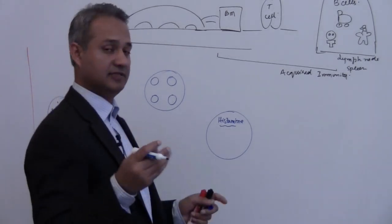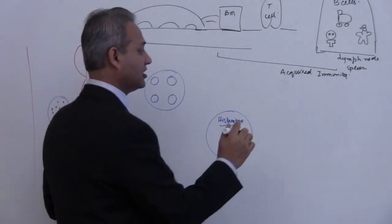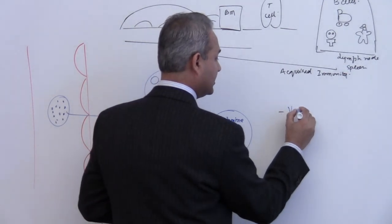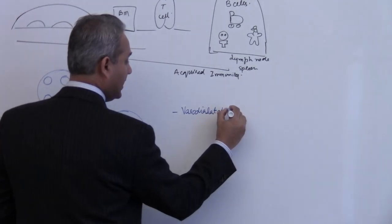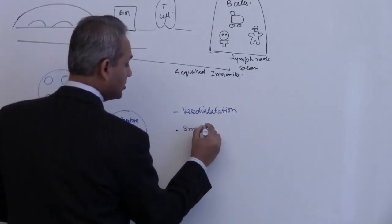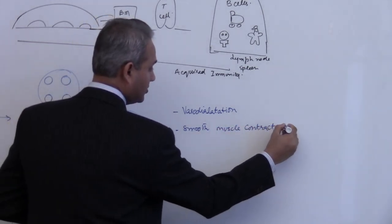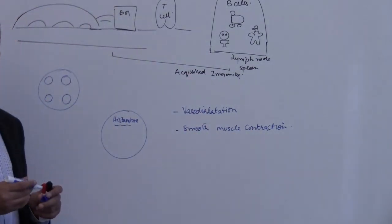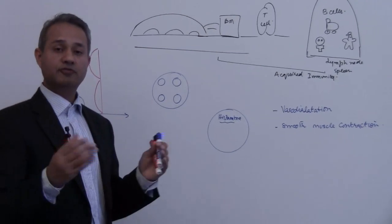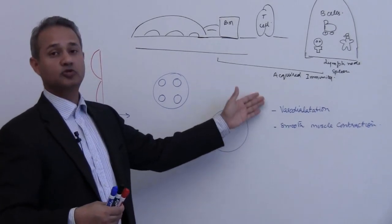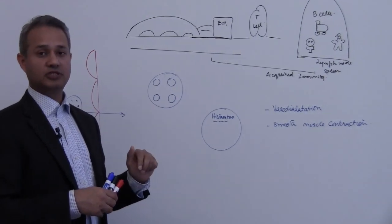For these cells, for eosinophils, for mast cells, for basophils, you would see this general theme: vasodilation and smooth muscle contraction. This is the general thing. Most of the mediators which these guys are releasing would be doing these two primary functions: vasodilation and smooth muscle constriction.